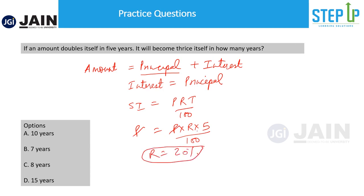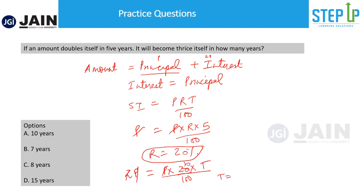Now it asks: in how many years will it become thrice itself? If the amount becomes thrice, that means the interest would be 2P, since amount = P + interest = 3P. So now: 2P = P × 20 × T / 100. The P's cancel, and you calculate T = 2 × 100 / 20, which equals 10 years.